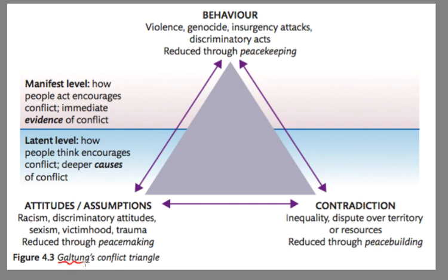Take a look at this figure here, figure 4-3 from the Pearson Essentials textbook, and it's looking at Galton's Conflict Triangle. Basically what this is saying is that there are three different factors that when they combine together and when they work together — which they often do — it results in violent conflict. Let's take a look at each one and some examples of each.